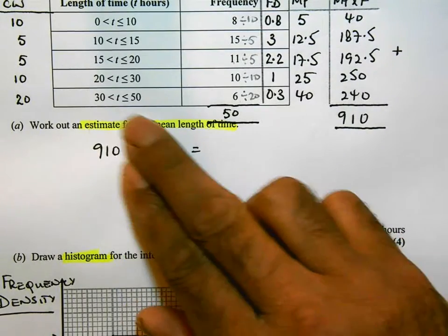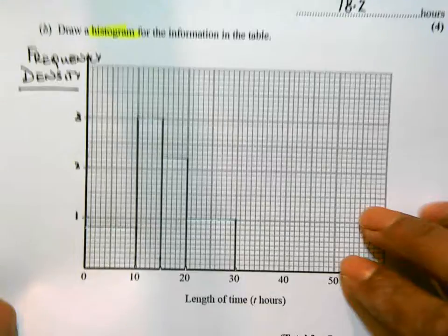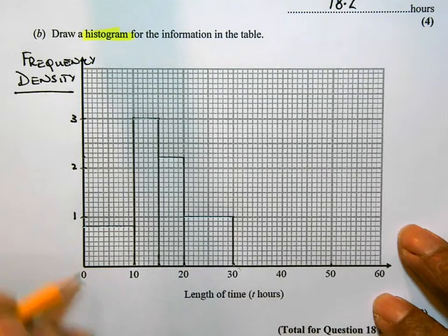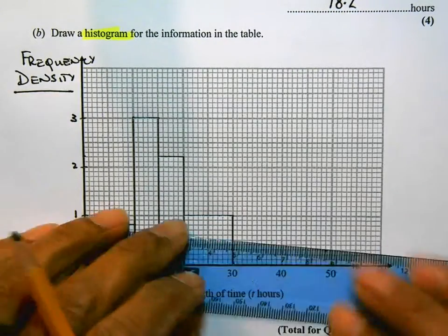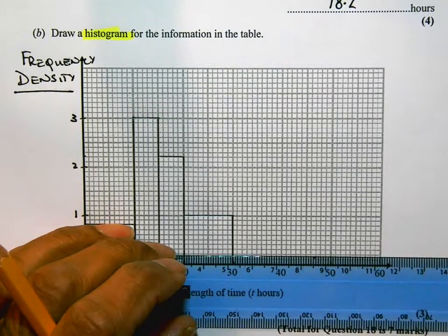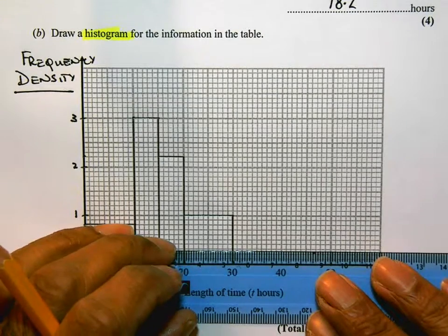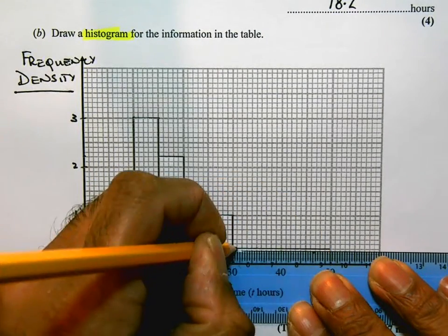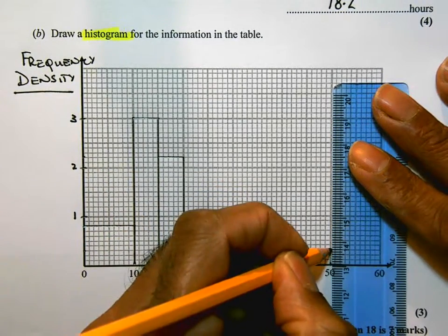And finally, the last one goes from 30 to 50 and it has a frequency density of 0.3. So 30 to 50 and its frequency density is 0.3. So using my ruler and 1, 2, 3 squares above. And this completes my histogram.